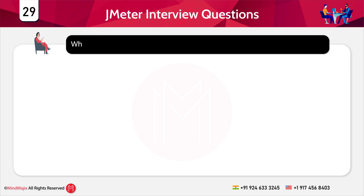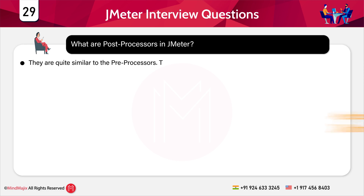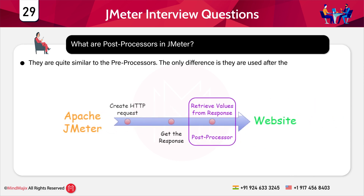The next question is: what are the post-processors in JMeter? They are quite similar to pre-processors. The only difference is that they are used after the accomplishment of sampler requests. They can easily be used when it comes to taking values from the sampler response.